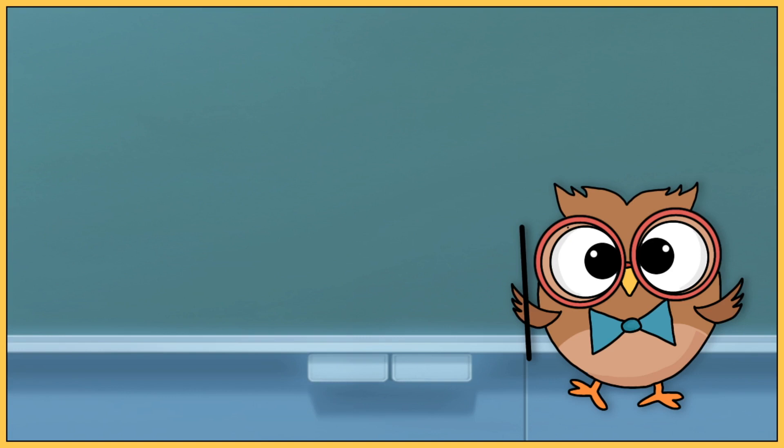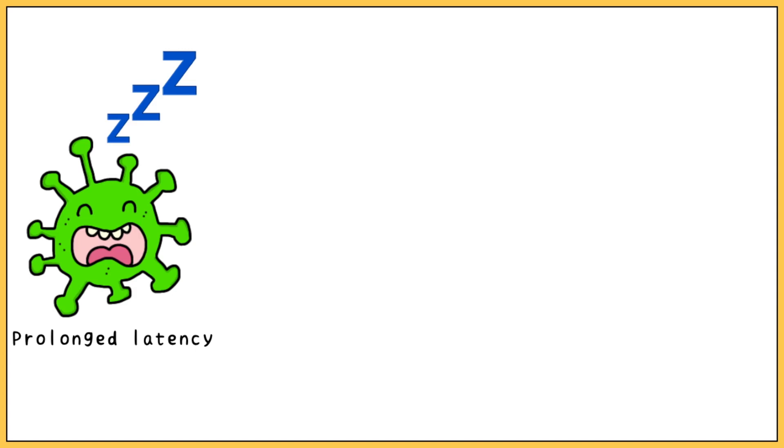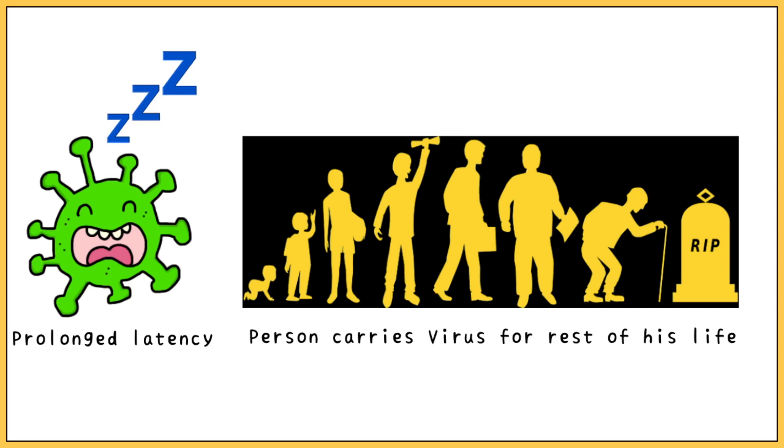Today we are going to look at another member of the herpes family: CMV, or cytomegalovirus. Infection caused by this virus is almost always inapparent due to prolonged latency of the virus. It is for this very reason that people carry the virus with them for the rest of their lives. The virus is always obtained from a human reservoir.